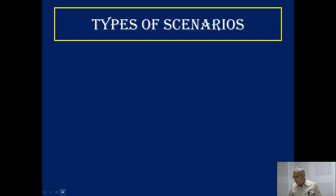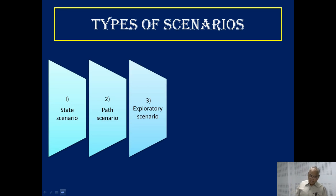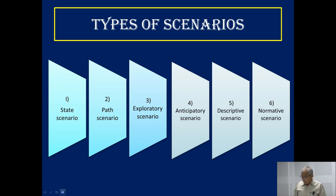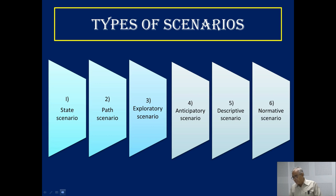Now we go for scenario writing. In scenario writing we involve people in different kinds of scenarios that project and depict the future state of things to happen. There are six kinds of scenarios: the first is the state scenario, second is the path scenario, third is the extrapolatory scenario, fourth is the anticipatory scenario, fifth is the descriptive scenario, and sixth is the normative scenario.